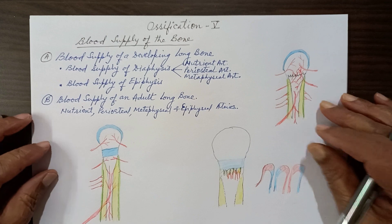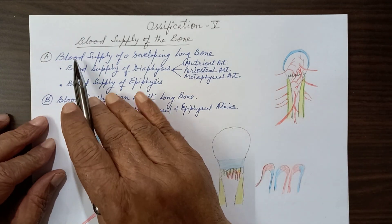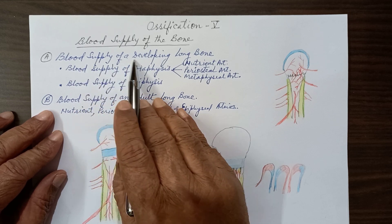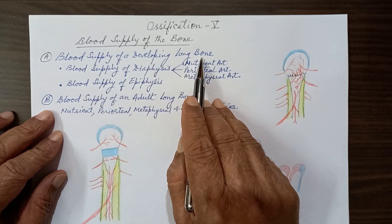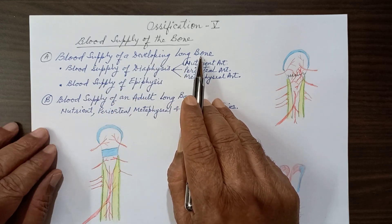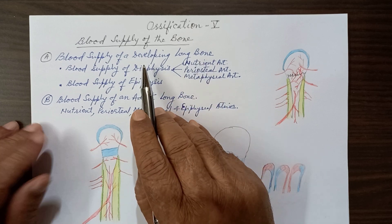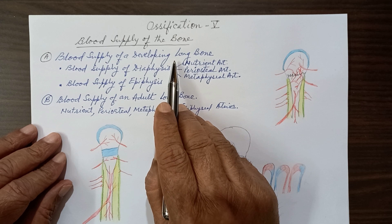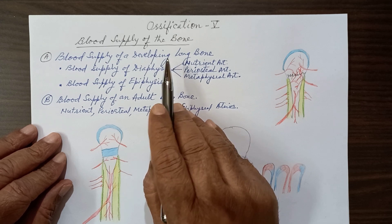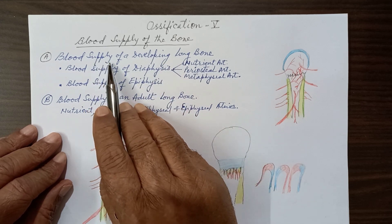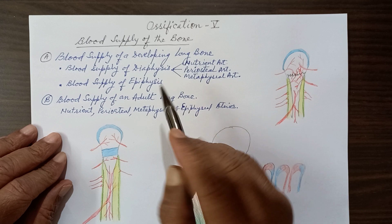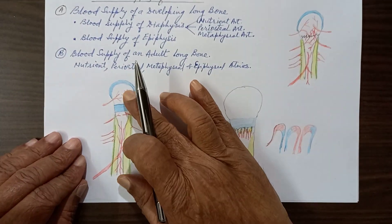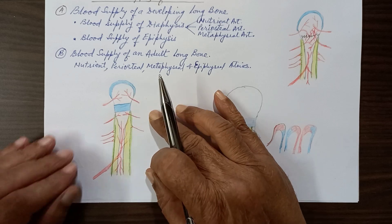We will learn the blood supply of the bone in two different steps. First, we will learn about the blood supply of a developing long bone — short bones are supplied in a similar way, but it is better to understand it first in a long bone. This is the blood supply of a developing long bone, which I have already drawn in this diagram.